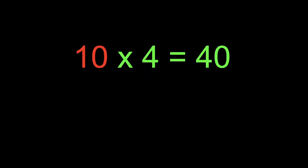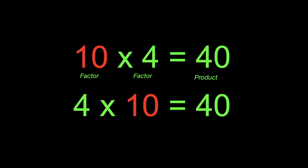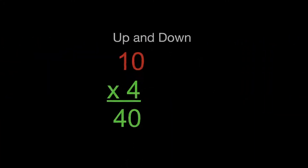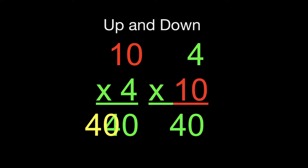The numbers that you multiply — for example, 10 times 4 — are called factors. The answer in multiplication, for this example 40, is called the product. You can switch the order of your factors and you will still get the same product. You can also multiply up and down; for example, 10 times 4 equals 40, and you could switch the order and you are still going to get the same answer.